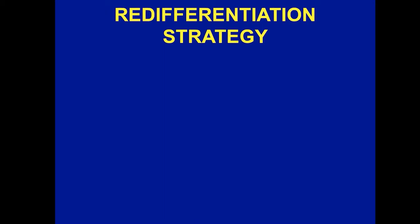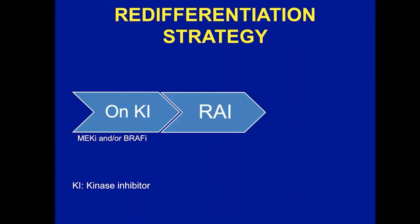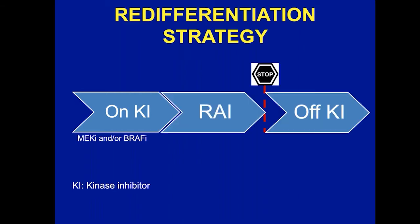To clarify what the redifferentiation strategy overall is: these patients have radioactive iodine refractory disease, they're placed on a kinase inhibitor, and then they're treated with radioactive iodine if they take up iodine. And once they're treated with the radioactive iodine, the kinase inhibitor is stopped.